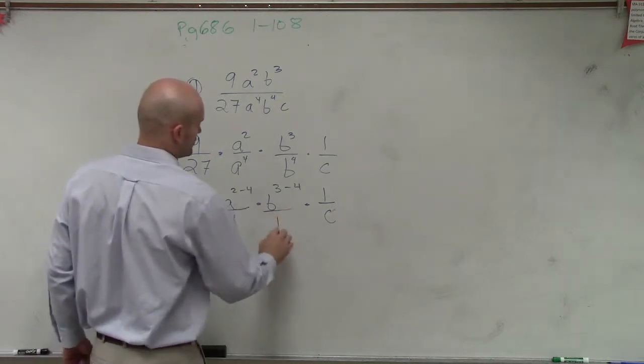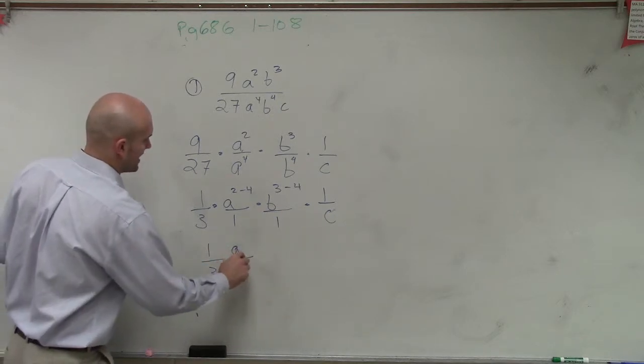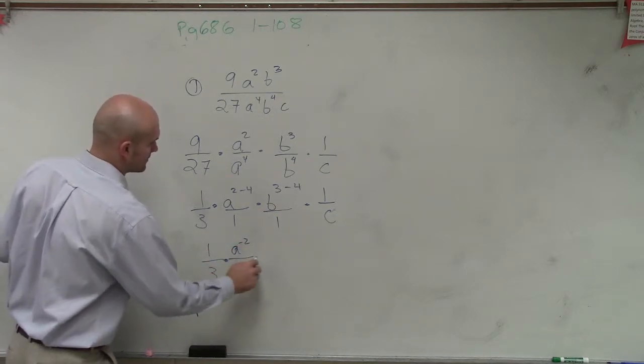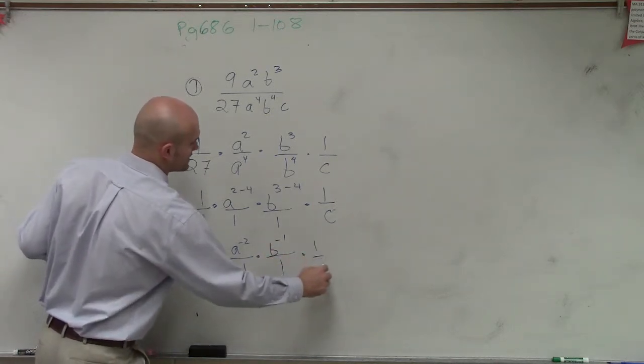Let's keep these all in the numerator. So I have 1 third a negative squared times b to the negative first times 1 over c.